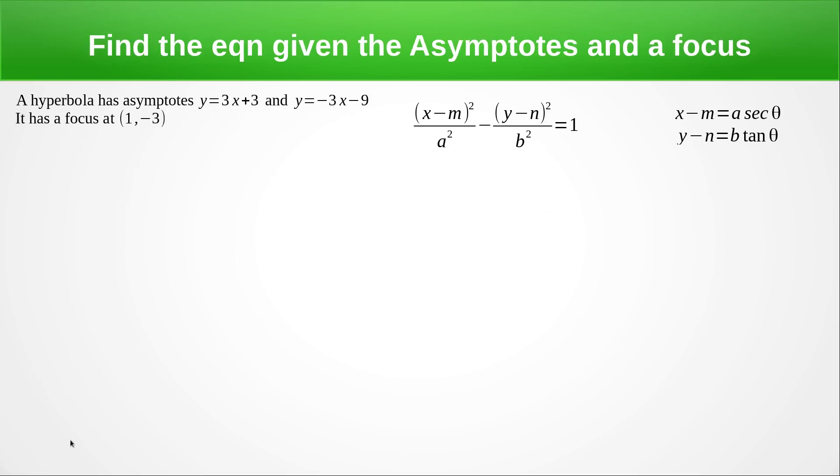Okay, so this is our last example. It is the harder of the ones. And you might want to watch this one more than once and make sure you can really understand what's going on. So here we're going to find the equation where we know the asymptotes and the focus. So we've got our hyperbola has these asymptotes here and this is the focus. So we want to find the centre first.